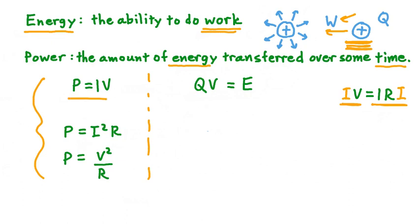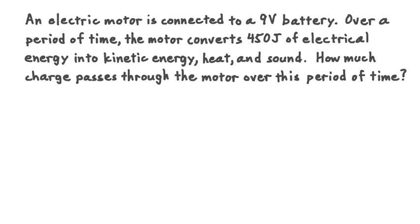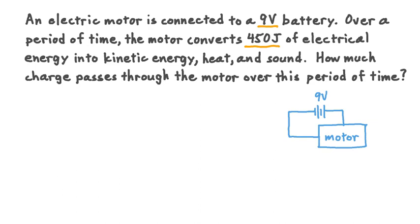Now that we know these equations, let's get a bit of practice using them through a couple of examples. We have an electrical motor being powered by a 9-volt battery. We want to know, over the time it takes the motor to convert 450 joules of electric energy into kinetic energy, heat, and sound, how much charge passes through the motor over that time.